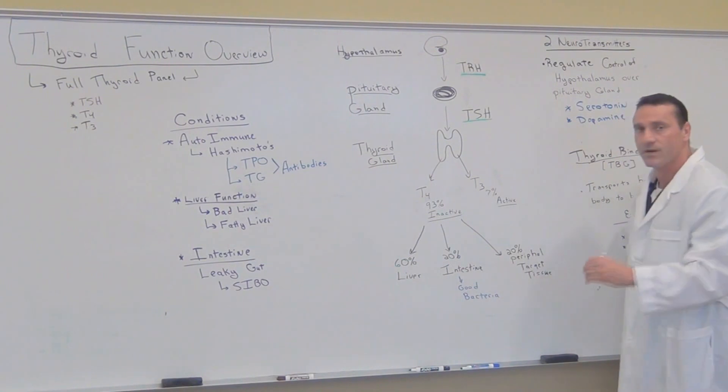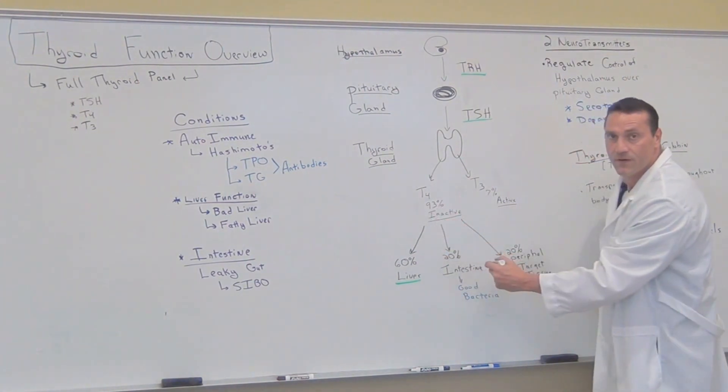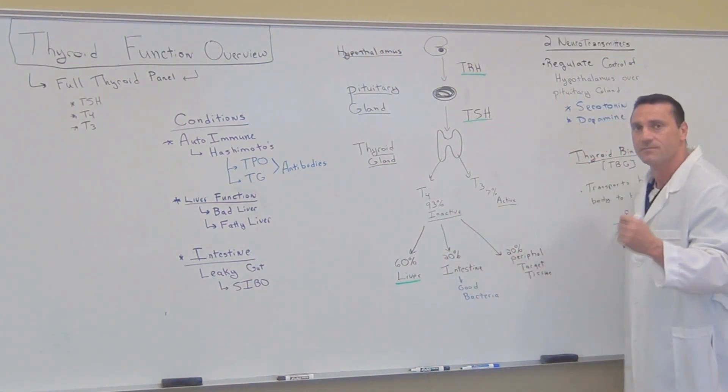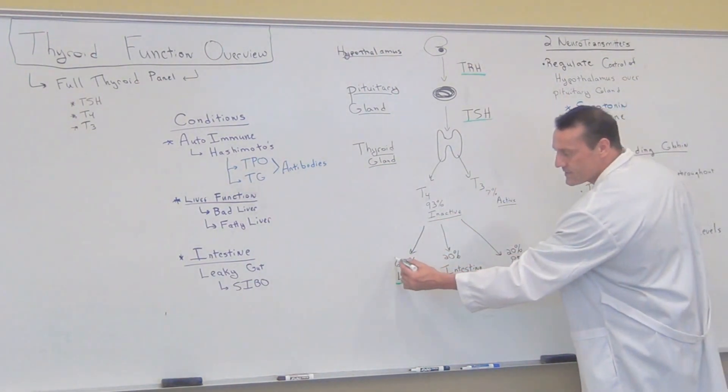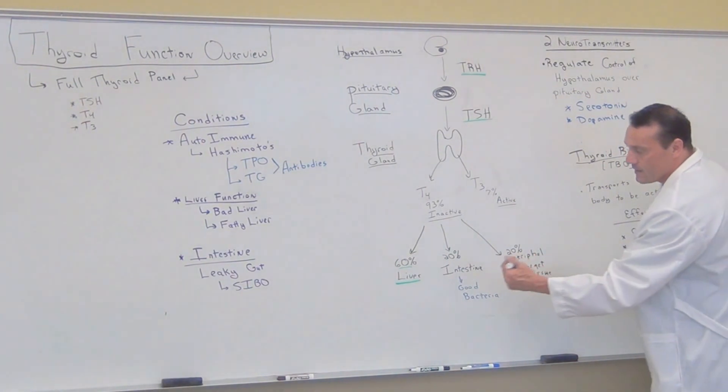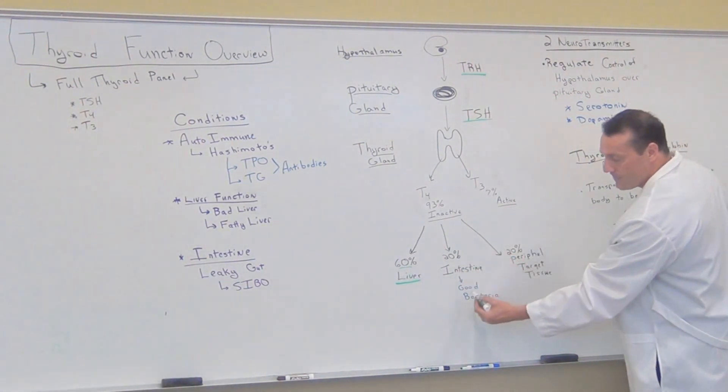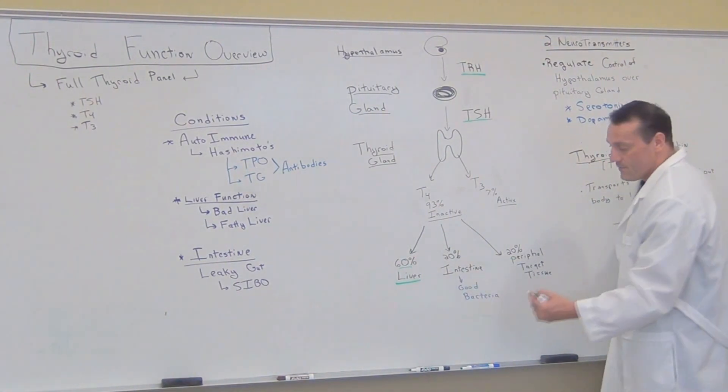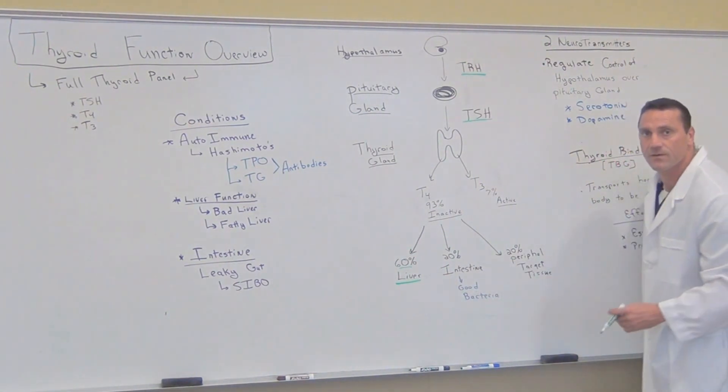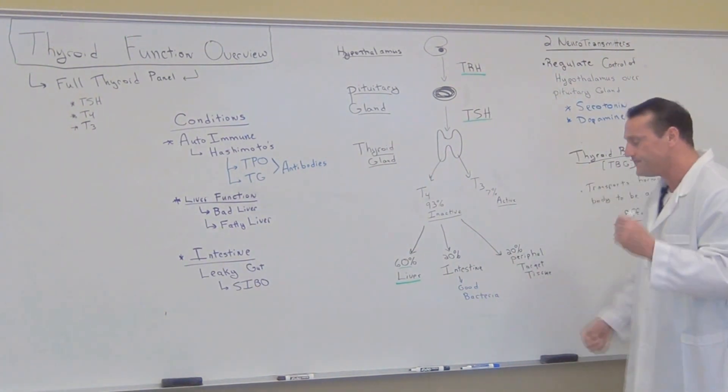Now there's different areas where it converts to active T3. 60% of inactive T4 is converted to active form T3 in the liver. 60%. So liver health is very, very important for thyroid conversion. 20% is converted into active T3 in the intestine by the way of good bacteria. So having a healthy gut is very, very important for the conversion of T4 to T3.